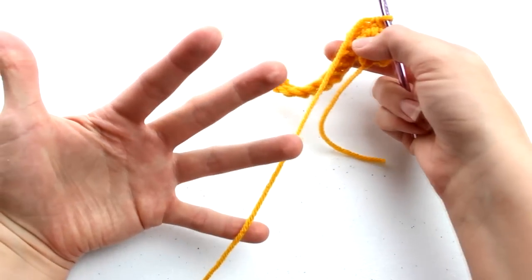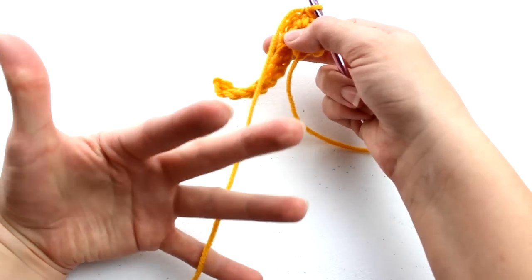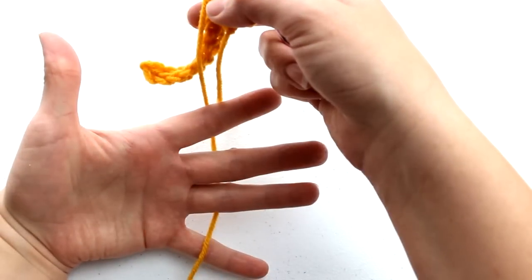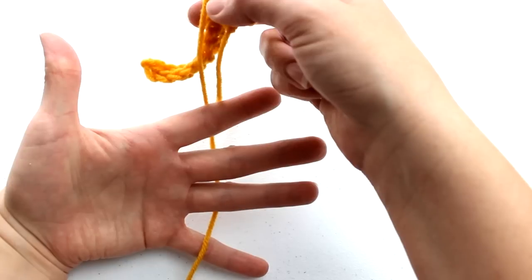So what I'm going to do instead of wrapping the yarn around my pinky finger, I'm going to place the yarn under my pinky and over the top of the rest of my fingers. Now this works for me, but this may not work for you. So I'm going to quickly show you another way that might be better for you.